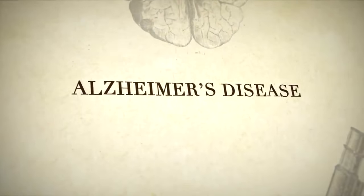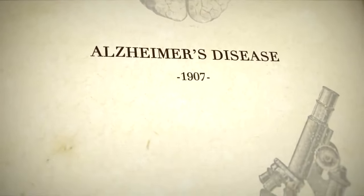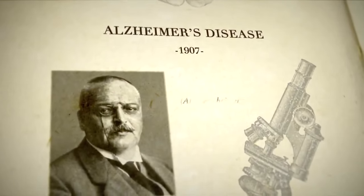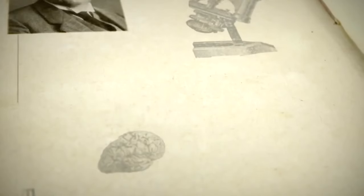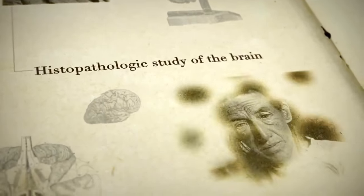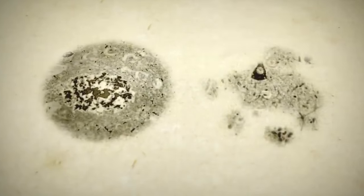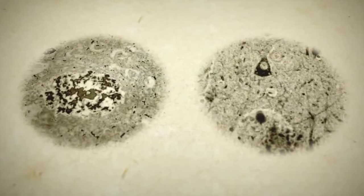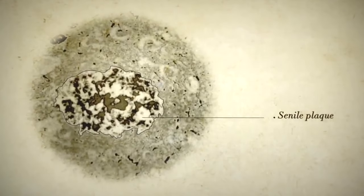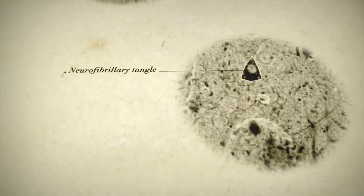Alzheimer's disease was described for the first time in 1907 by the German psychiatrist Alois Alzheimer. In performing a histopathologic study of the brain of his patient Auguste, suffering from dementia, he brought to light the presence of two types of lesions in the brain: senile plaques and neurofibrillary tangles.